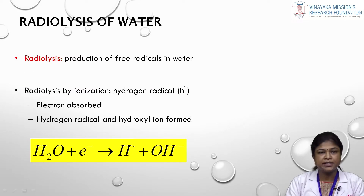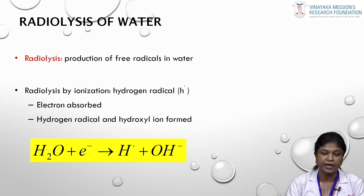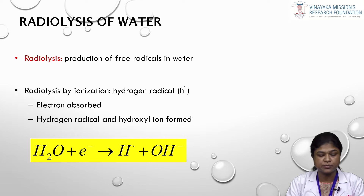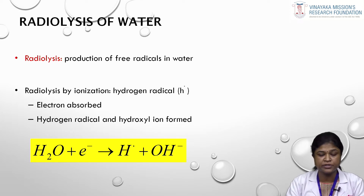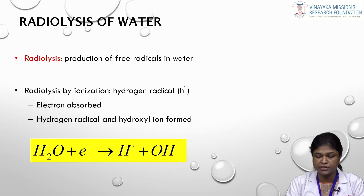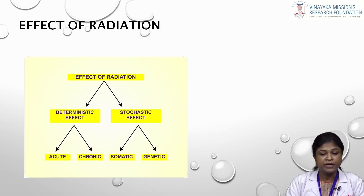To understand this, let us understand what radiolysis of water is — it is the production of free radicals in water. When we are exposed to radiation, it produces radiolysis. When water is exposed to an electron or a photon, it produces hydrogen ions as well as hydroxyl ions. These free radicals are unstable and are the ones which produce changes in the system.